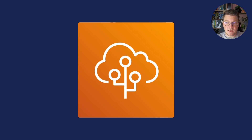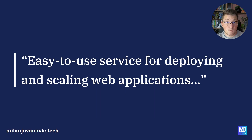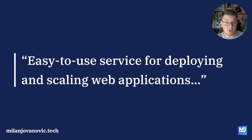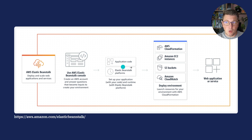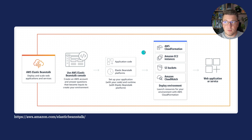The AWS team has an answer with a service called Amazon Elastic Beanstalk. Elastic Beanstalk is an easy-to-use service for deploying and scaling web applications. You start by setting up an Elastic Beanstalk instance, which allows you to set up the initial infrastructure required to host your application code. You can deploy your code through a zip file or through Visual Studio, and Beanstalk will take care of provisioning the resources you need to run your application.